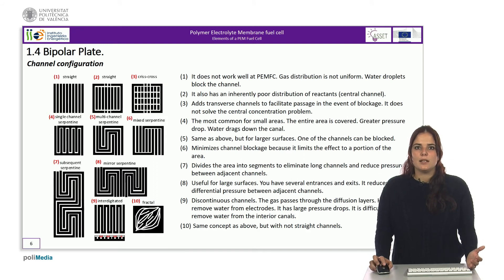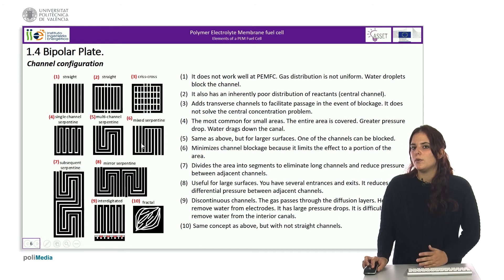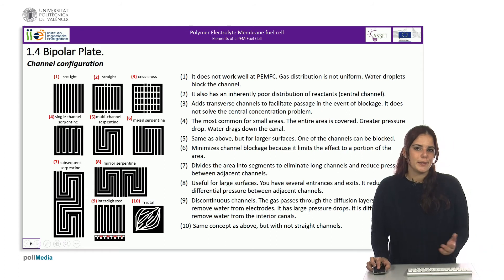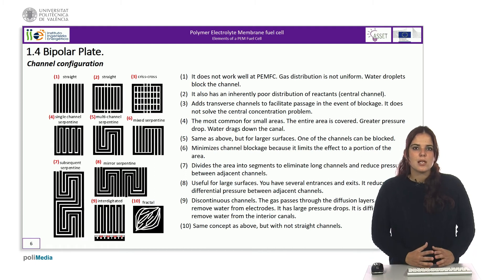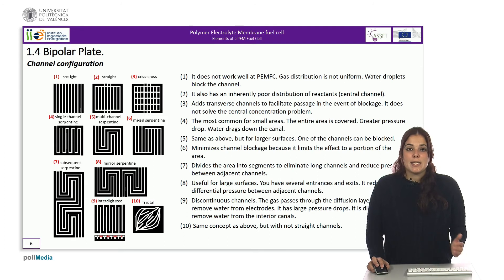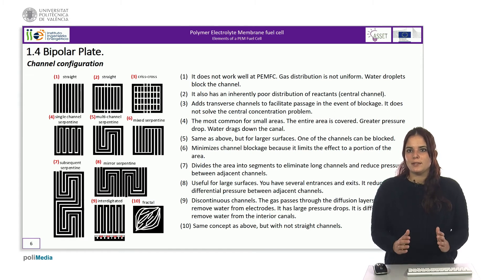Configuration 5 has the problem that one of the channels can be blocked. Configuration 6 can solve the blockage, although it does not allow the water to be removed from the flooded area, presenting the same problem as the first configurations. If the surface area is very large, as in the case of fuel cells in hydrogen vehicles, the normal serpentine configuration could cause a very large pressure difference between channels, as a result of the long channel travel and gas transferring from one channel to another without completing the full path.